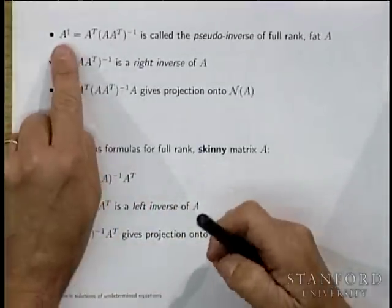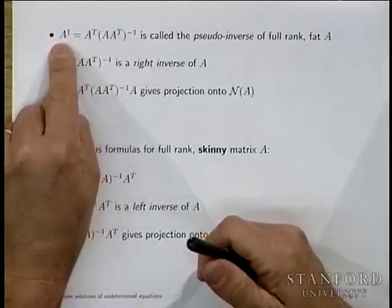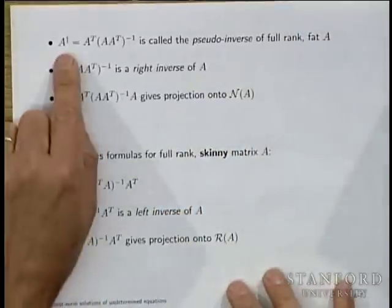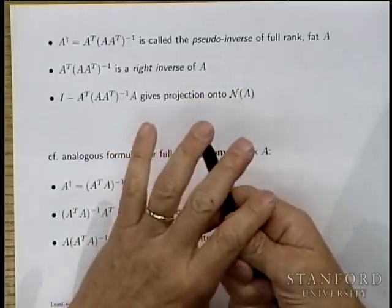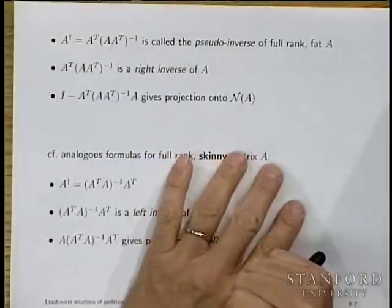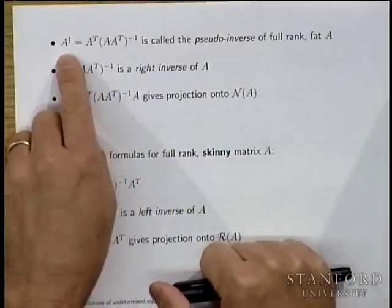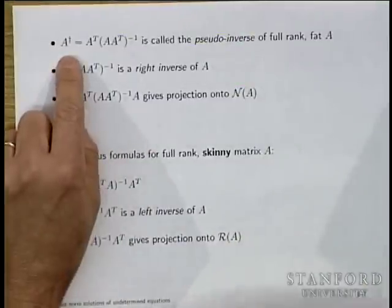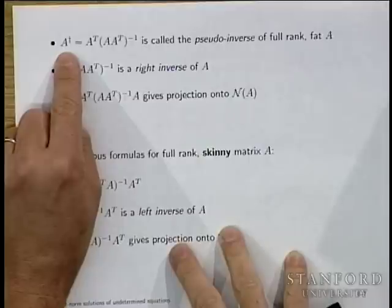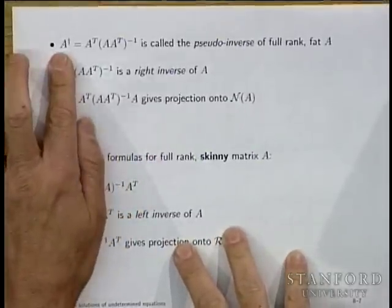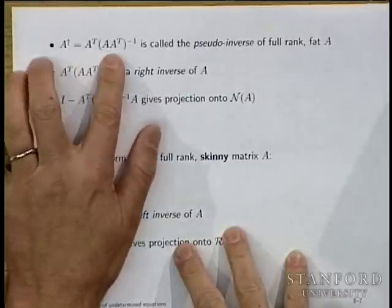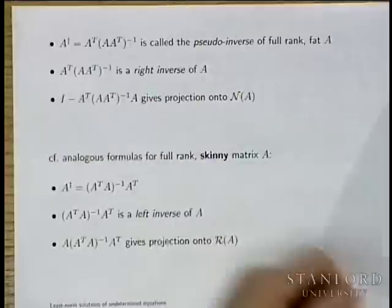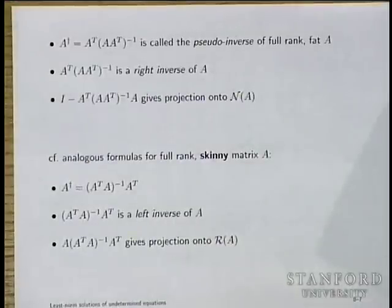This formula, A transpose (A A transpose) inverse, is also the pseudo-inverse — the pseudo-inverse of a full rank fat A. So far, the dagger symbol has two overloadings. A dagger applies when A is skinny and full rank, meaning A dagger is (A transpose A) inverse A transpose, associated with least squares. And now A dagger for fat full rank A is A transpose (A A transpose) inverse, giving the least norm solution. In about three weeks, we will complete the overloading of dagger for all non-zero matrices.